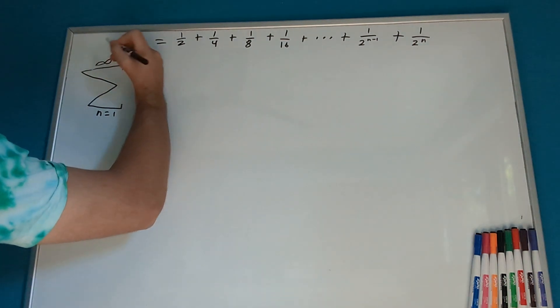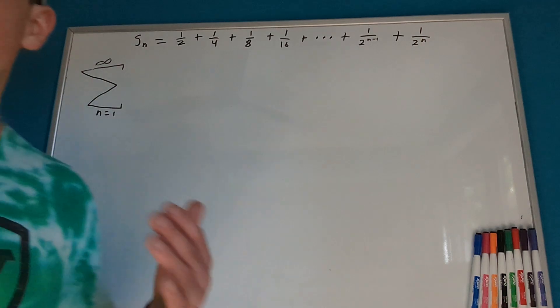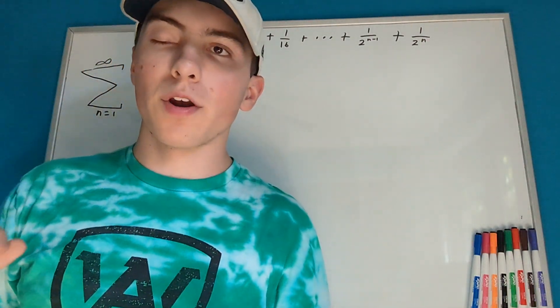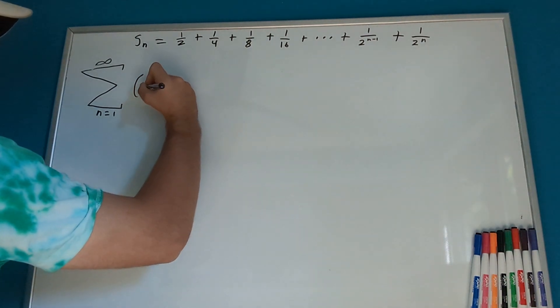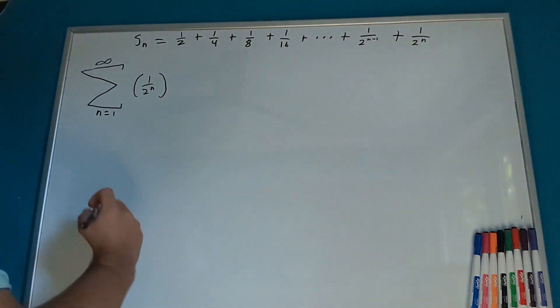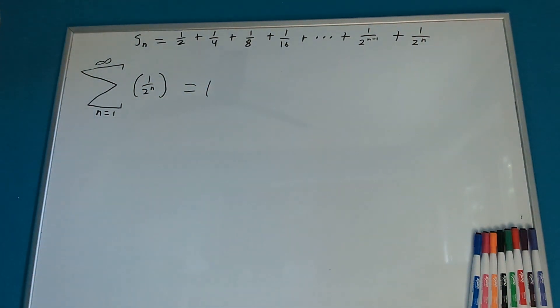And our pattern that we're working with here, well, maybe you already spotted it, but our pattern is 1 over 2 to the n. So, we're going to say this is 1 over 2 to the n. And, as I said, what I want to show you is that this whole thing equals 1.